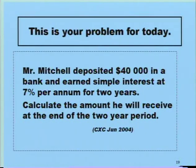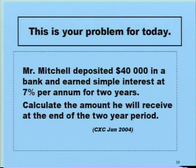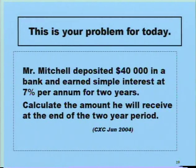This is your problem for today. Mr. Mitchell deposited $40,000 in a bank and earned simple interest at 7% per annum for two years. Calculate the amount he will receive at the end of the two-year period. This question is taken from CXC June 2004.